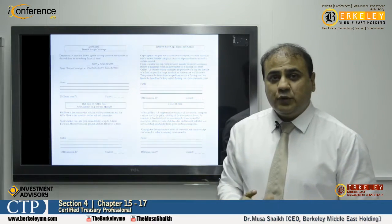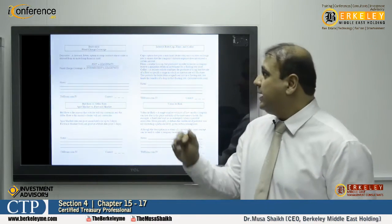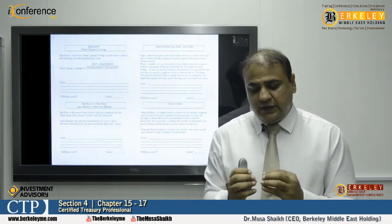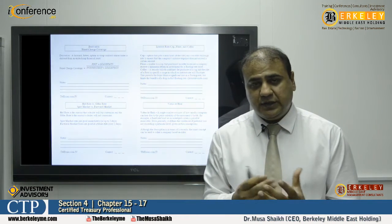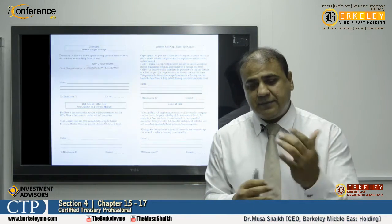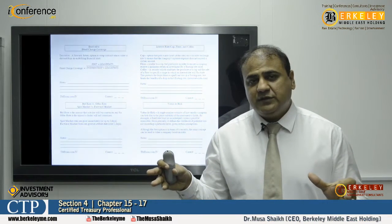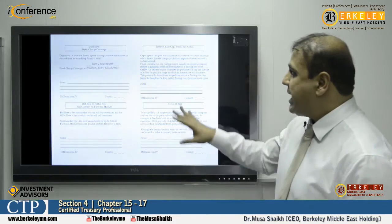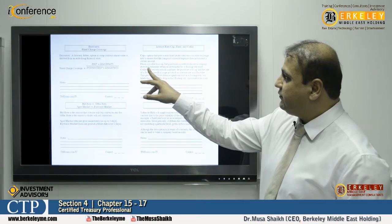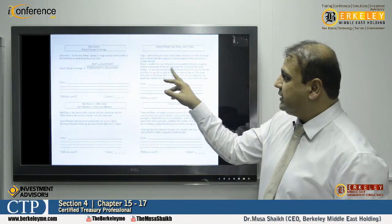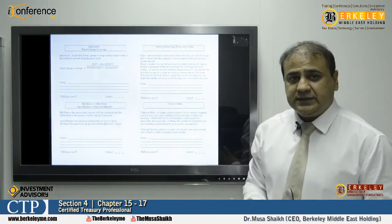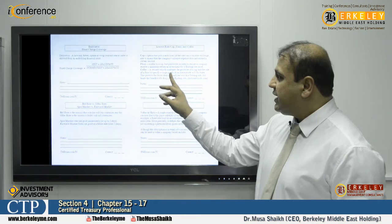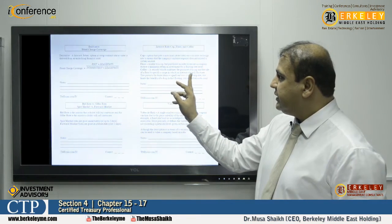Let's discuss interest rate caps, floors, and collars. We can freeze any activity or security prices within an upper cap and a lower floor. This helps investors not to earn too much or lose too much. A cap option puts a maximum limit, and a floor is the minimum limit assigned. A collar is a security that combines the purchase of a cap and the sale of a floor to specify a range in which an interest rate will fluctuate.